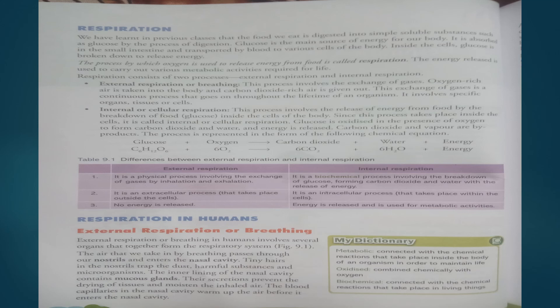External respiration, or breathing in humans, involves several organs like the lungs, nose, and windpipe. The air we take in by breathing passes through our nostrils and enters the nasal cavity. Tiny hairs present in the nostril trap dust, harmful substances, and microorganisms, and fresh air is sent to the lungs. The inner lining of the nasal cavity contains mucus glands which always produce mucus — their secretion prevents the drying of tissues and moistens the inhaled air. The blood capillaries in the nasal cavity warm up the air before it enters further.